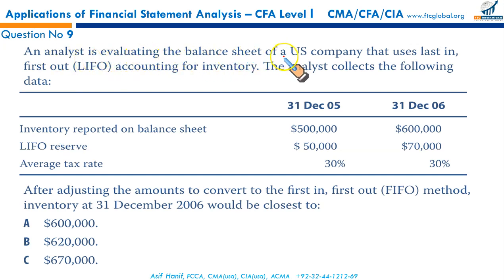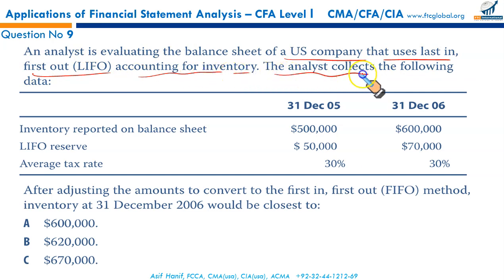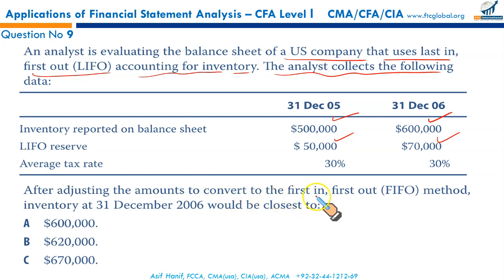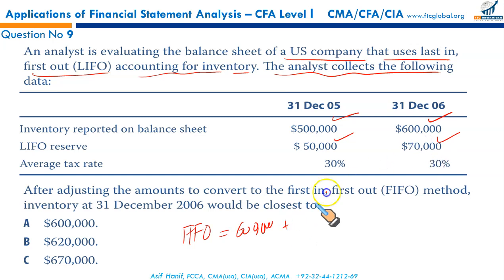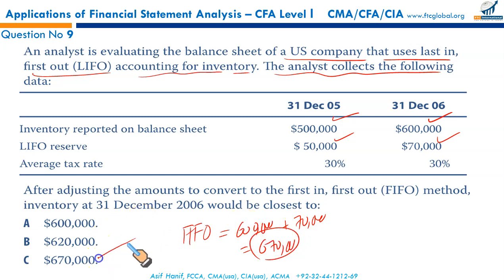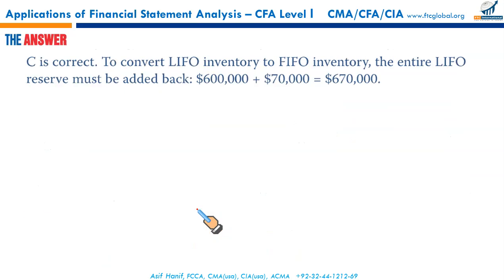An analyst is evaluating the balance sheet of a U.S. company using LIFO inventory accounting. After adjusting to convert to the FIFO method: FIFO Inventory = LIFO Inventory + Closing LIFO Reserve = $600,000 + $70,000 = $670,000. This is a straightforward conversion question. C is the right answer.